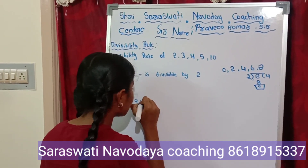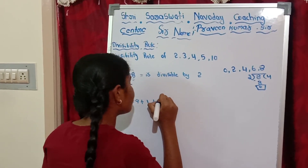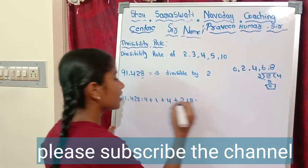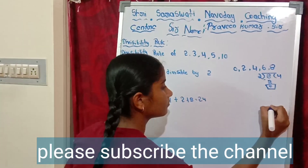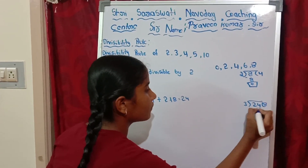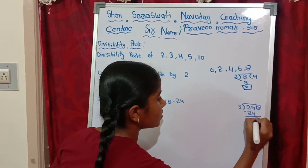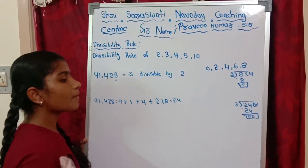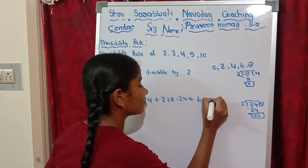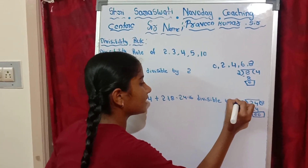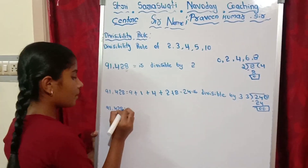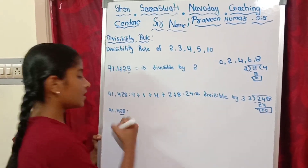For divisibility by 3, we add all the digits: 9 plus 1 plus 4 plus 2 plus 8 equals 24. Now 24 divided by 3: 3 times 8 is 24, 24 minus 24 is 0. So 91,428 is completely divisible by 3.